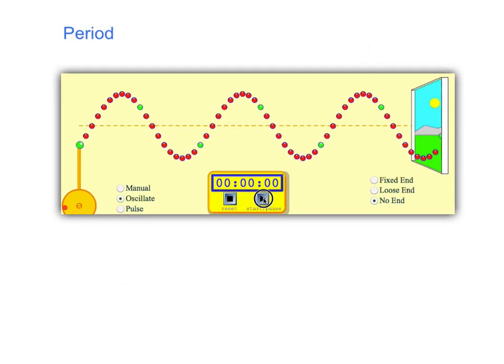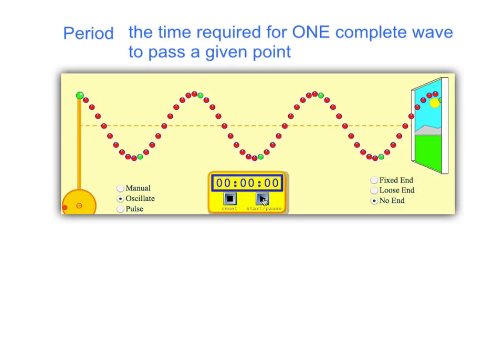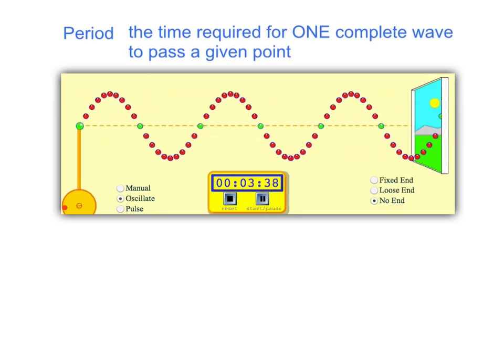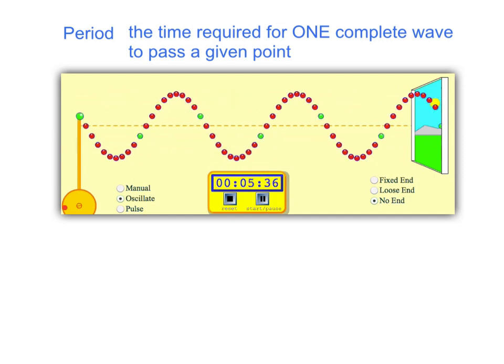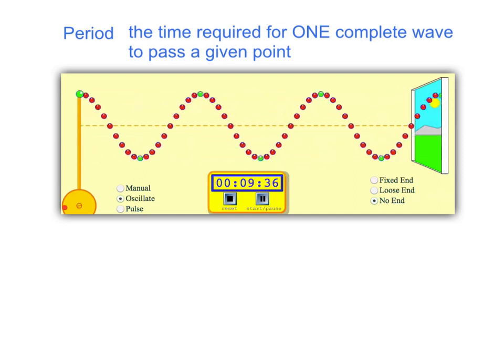Another thing we can measure about a wave is called its period. The period is defined as the time required for one complete wave to pass a given point. So as the waves are going by, you can see it takes a certain amount of time for them to go by. So the amount of time for just one wave to go by is called the period.